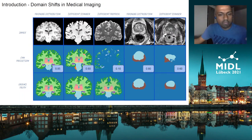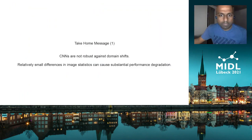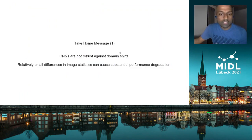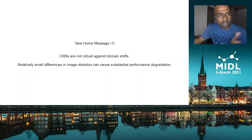This is reflected in quantitative measures — here we see the Dice scores. The first take-home message is that CNNs are not robust against such domain shifts, and even relatively small differences in image statistics can cause substantial performance degradation.